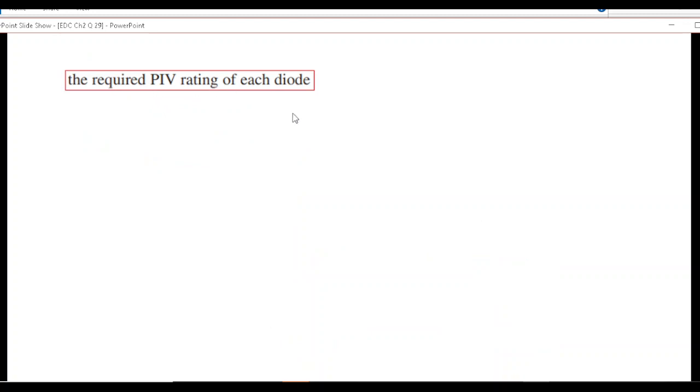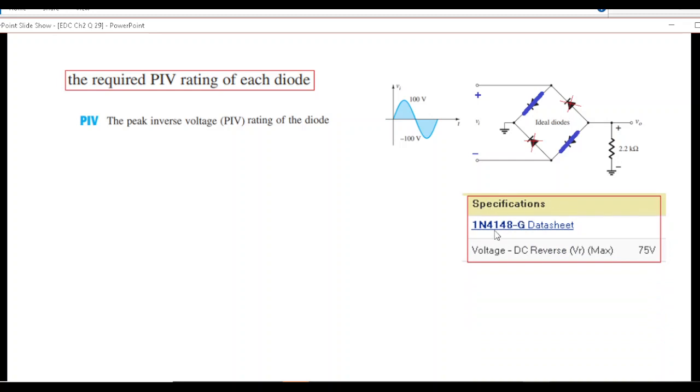This is very important that you understand what is PIV rating. PIV is peak inverse voltage. That means when this diode is forward bias and current is flowing through this, what will be the effect on the other diode which are not forward bias? This voltage will appear across the diode and this voltage might damage this diode if we don't select the diode properly. Let's see an example here.